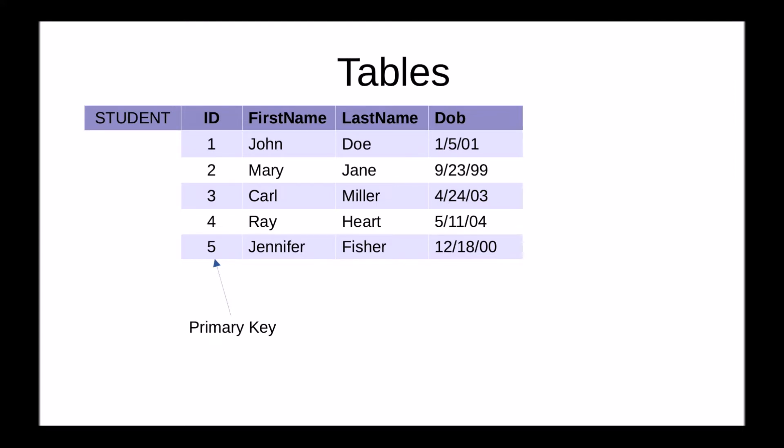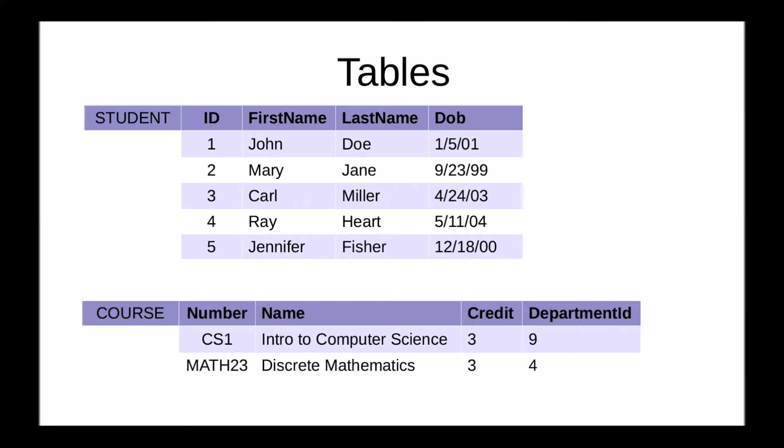Now a database obviously consists of many tables. Here's another example of a table that stores courses. In this case, the table has four columns: number, name, credit, and department ID. The number here is the primary key. CS1 uniquely identifies the course Intro to Computer Science, and MATH23 uniquely identifies the course Discrete Mathematics.